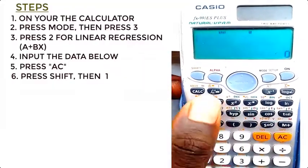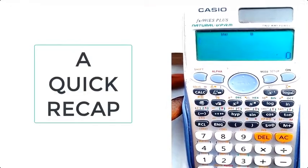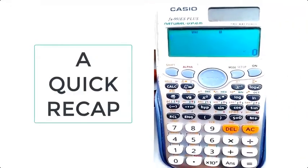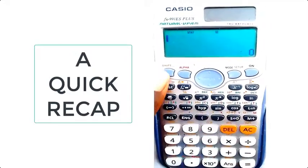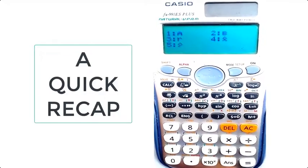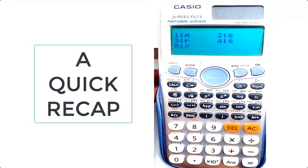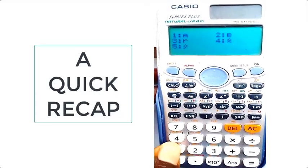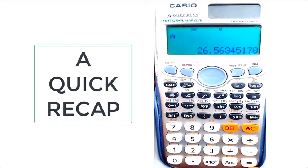So with this, we'll come to the end of how to solve regression analysis using natural display calculator. Remember, what you need to do after inputting data, press AC, then you press shift 1, and then you click on 5, so you can then find your A, find B, find your R. It's as simple as that.